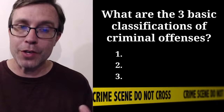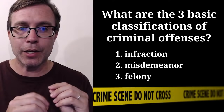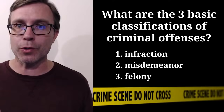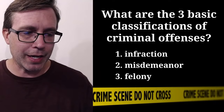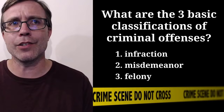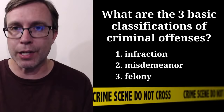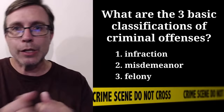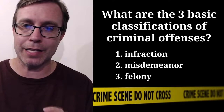Let me show you the answer. It goes from number one, the least severe, to number three, the most severe. The first is an infraction — just a minor offense, like jaywalking or getting a speeding ticket. A misdemeanor is something more serious, like stealing clothes from a store. And a felony is the most severe type of criminal offense, which would include things like murder. These are the three basic classifications, and also good words to know.